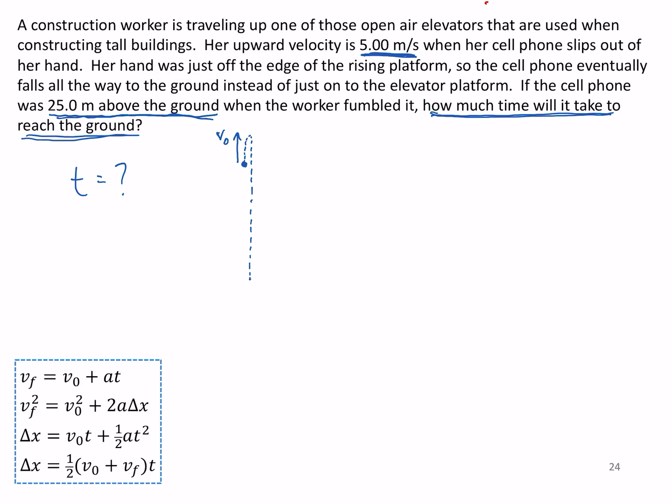So it's going to go up briefly and then it's going to turn around and it's going to go falling all the way down to the ground. And we're told that the release point—if the cell phone was 25 meters above the ground when the worker fumbled it—okay so at that release point it is 25 meters above the ground.